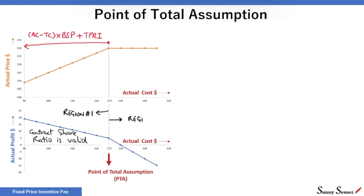To the right of PTA is Region 2. The share ratio in this region is always 0 to 100. Buyer bears no risk and the actual price is always equal to ceiling price. At PTA, these two regions overlap. The formula for actual price calculation in Region 1 at PTA will give us the ceiling price.